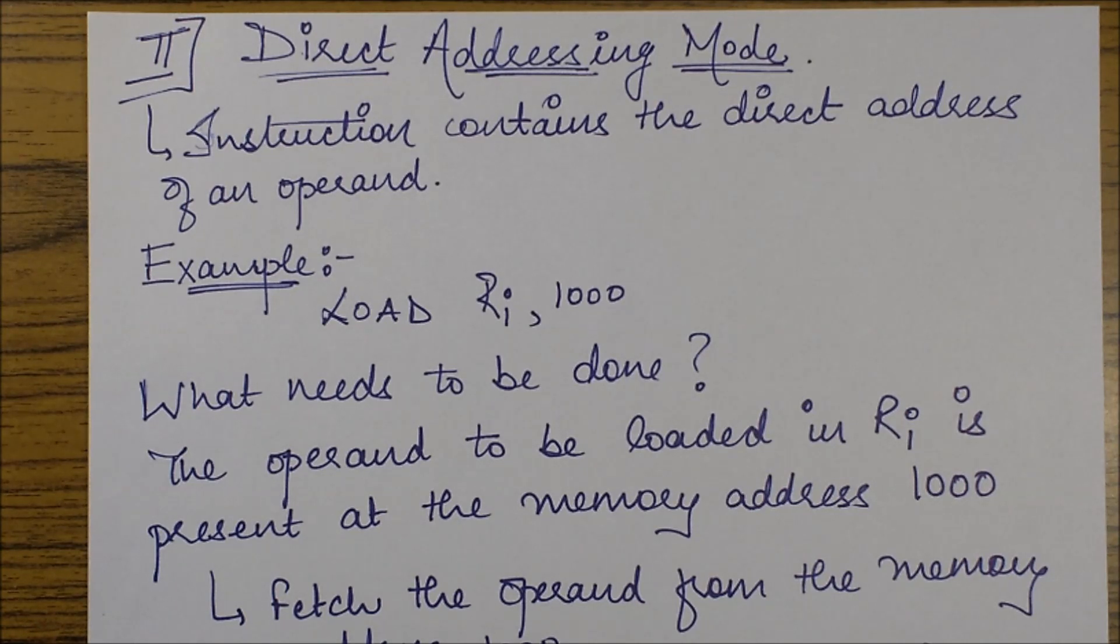In this mode, basically the instruction contains the direct address of an operand. Now it differs from the immediate addressing mode as the immediate addressing mode contains the value of the operand in itself. Over here we are provided with the direct address.